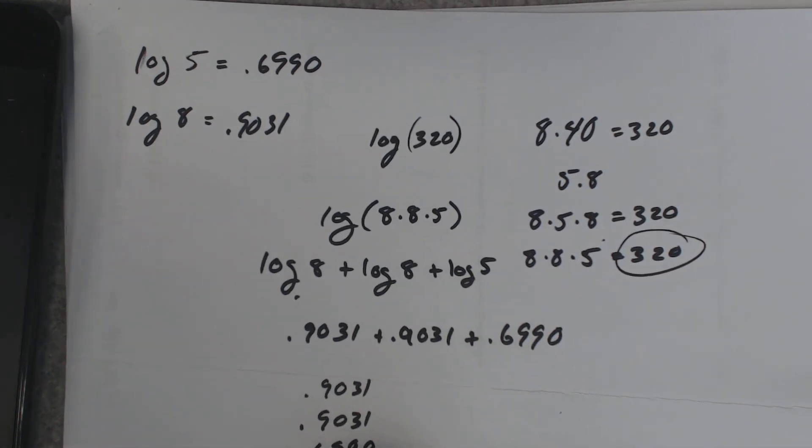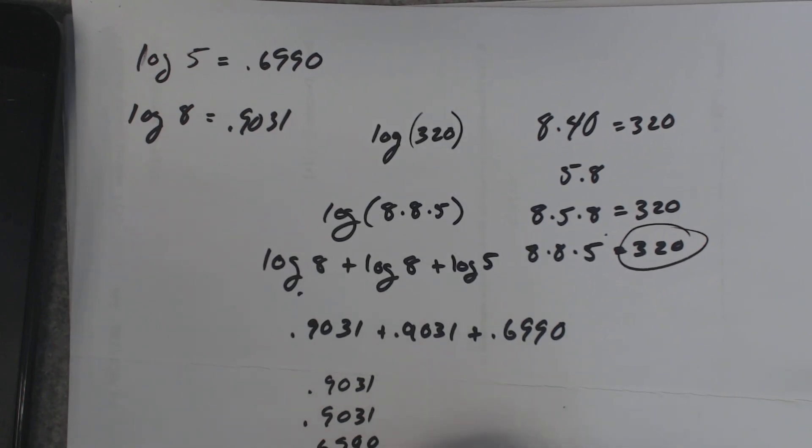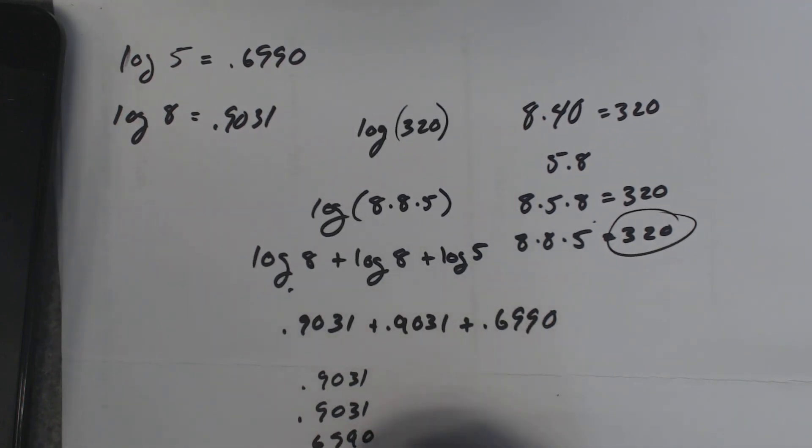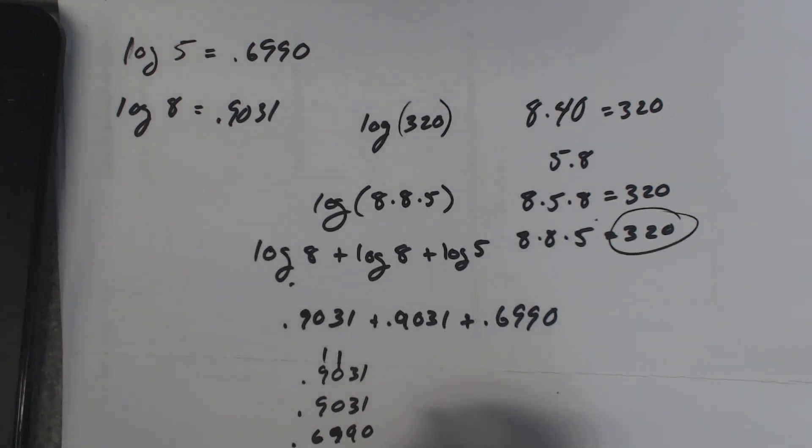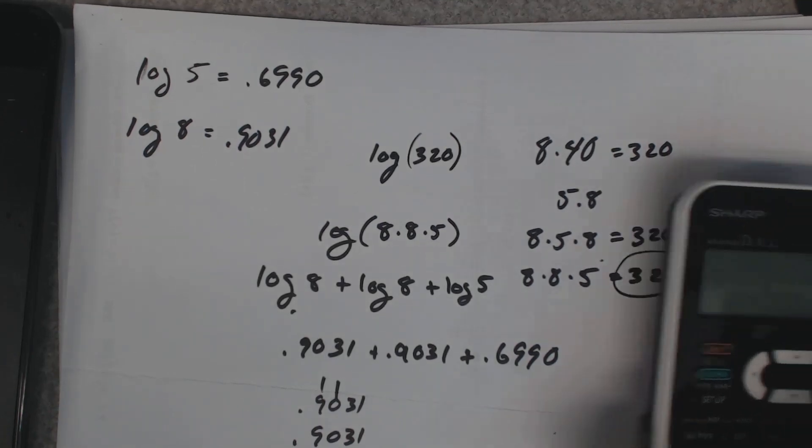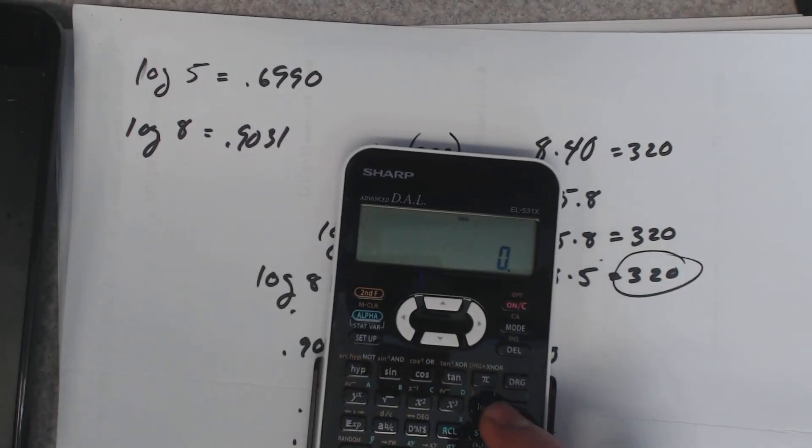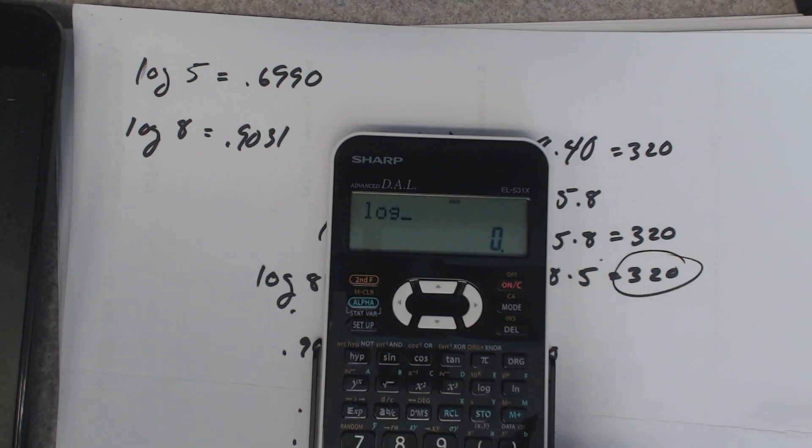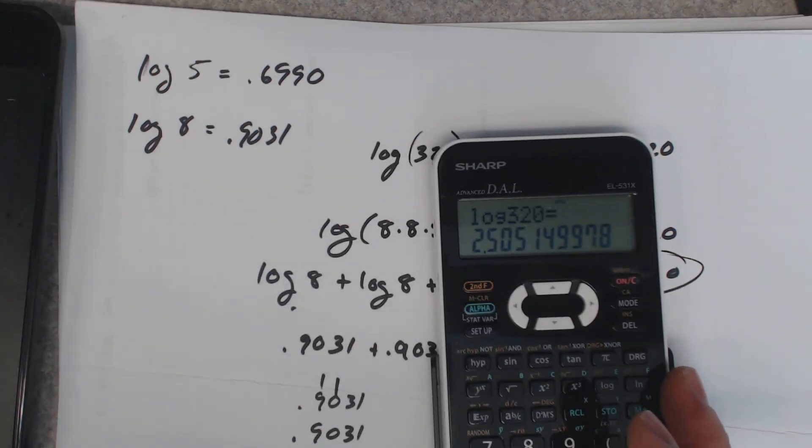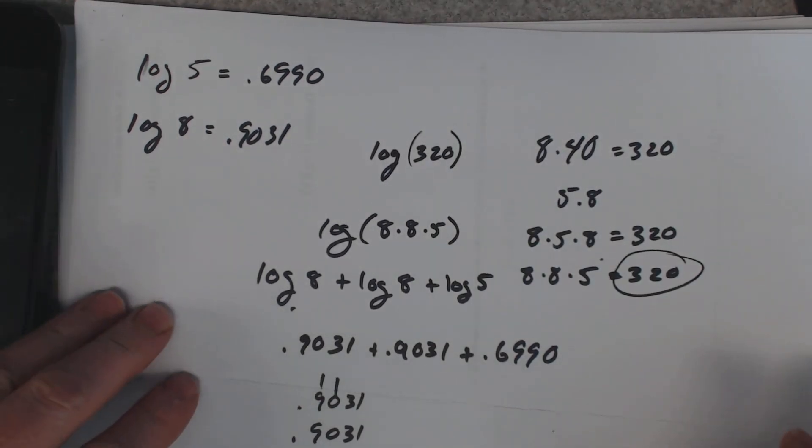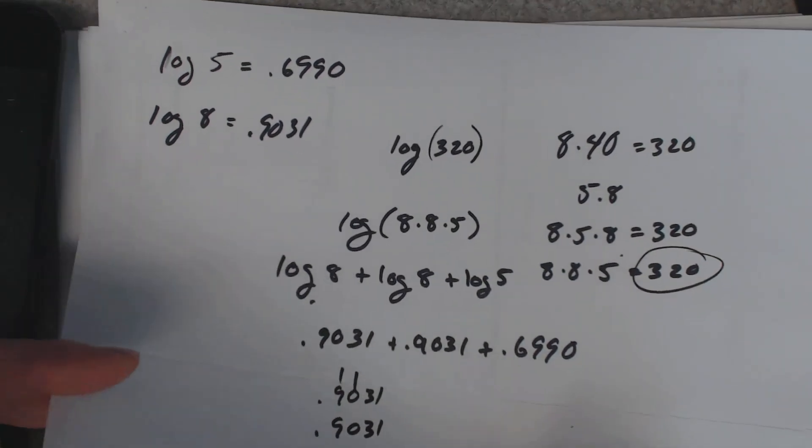I'm going to add these together and you wind up with 2.5052. And just for giggles I'll use my calculator to back me up here, log of 320: 2.5051, so it's a little bit off but it's okay. So there's that question.